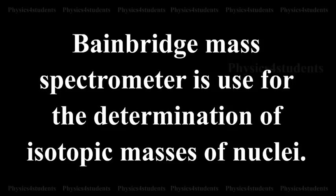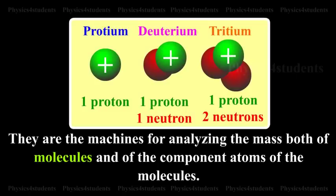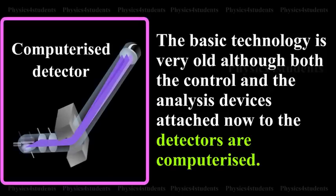Let us see the construction and working of it. They are machines for analyzing the mass both of molecules and of the component atoms of the molecules. The basic technology is very old, although both the control and the analysis devices attached now to the detectors are computerized.